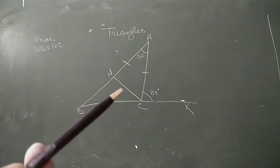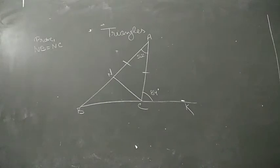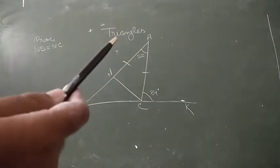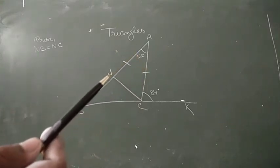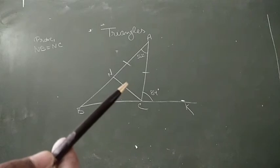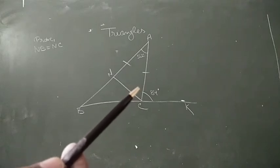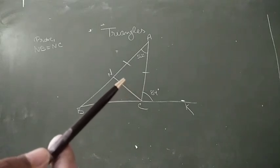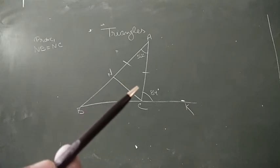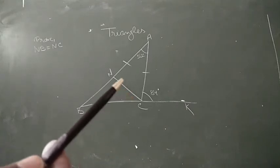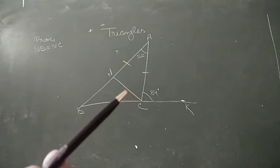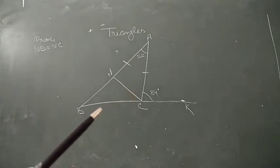We prove this using isosceles triangle properties. Since AN equals AC is given, in the isosceles triangle, angle N equals angle C. We need to find these two angles and then prove the result.